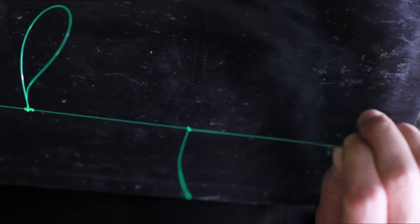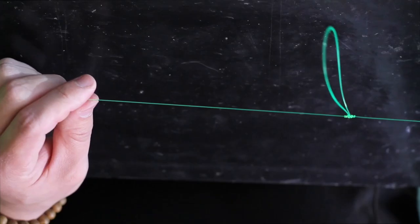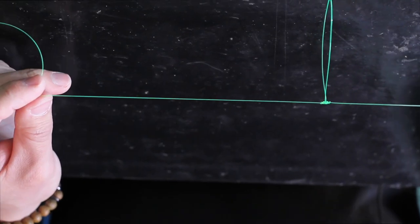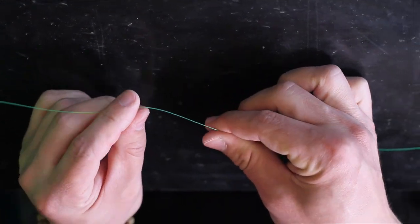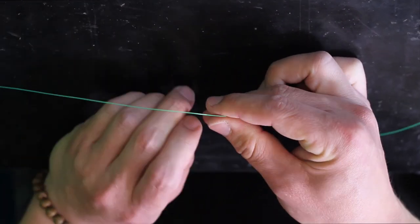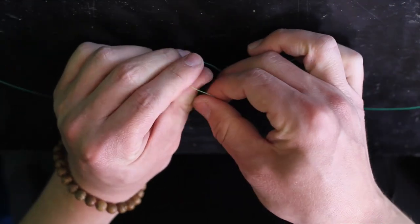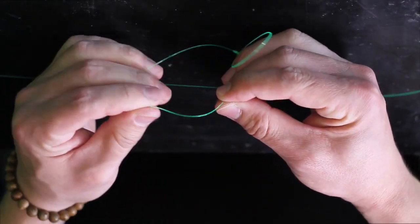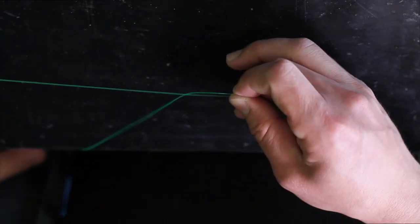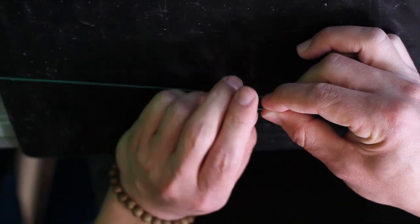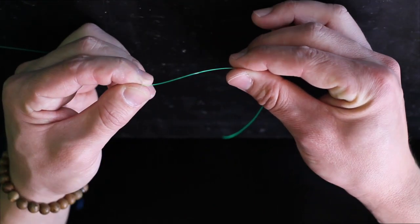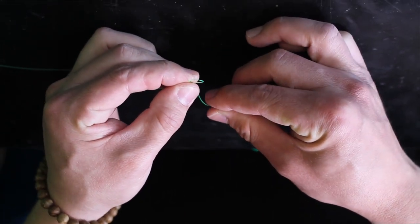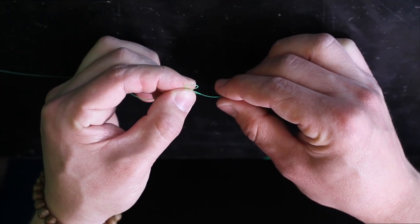Purpose for this loop is for the sinker or the weight. From here, from the top, we can do the same perfection loop, smaller, or we can tie a swivel.